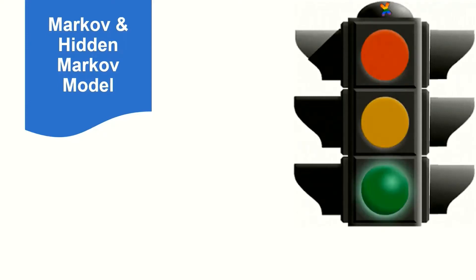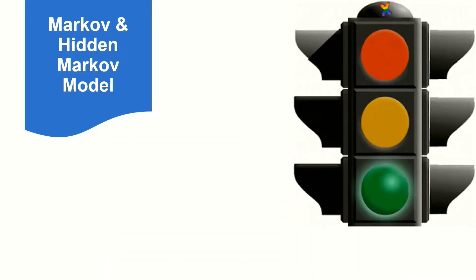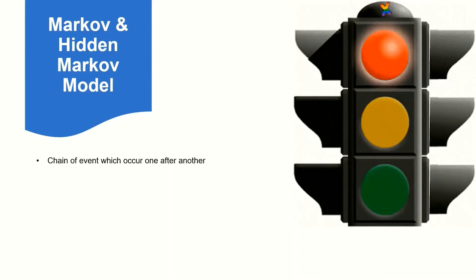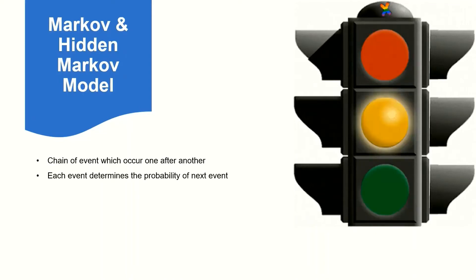Let's take a simple example to understand the Markov model. Suppose you are standing at a traffic signal and the light is red. You know that after red there will be a yellow light, and after yellow there will be green light. As you can see, there is a chain of events from red to yellow and yellow to green light, which are occurring one after another.